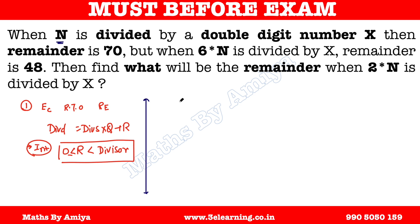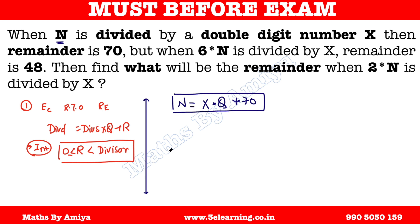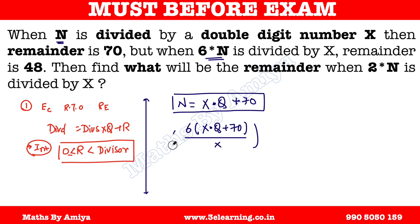When N, which is the dividend, is divided by divisor X, we have quotient Q, and the remainder is 70. So N equals X times Q plus 70. When 6 times of N — meaning 6 times (X into Q plus 70) — is divided by the same divisor X, the remainder is 48.